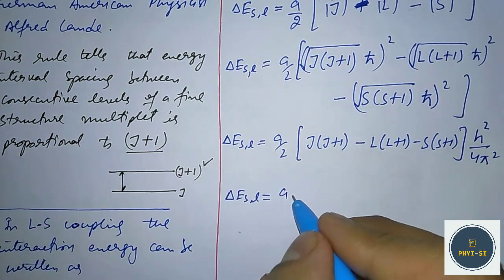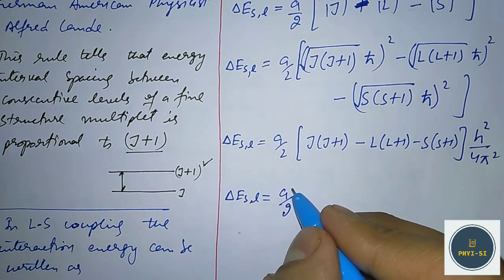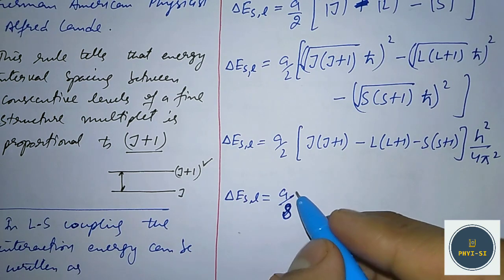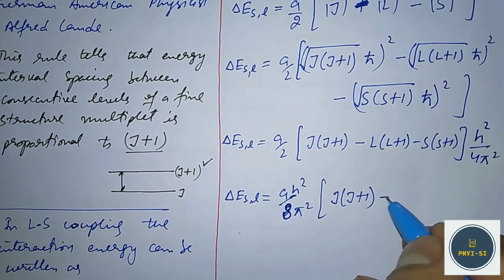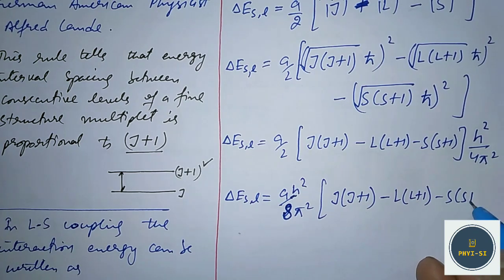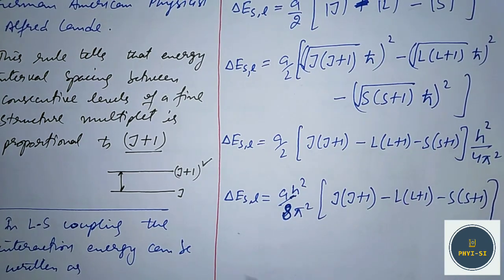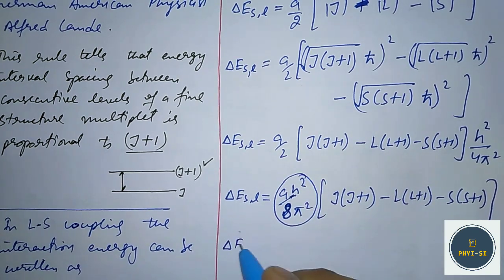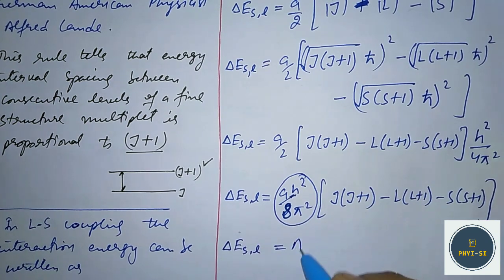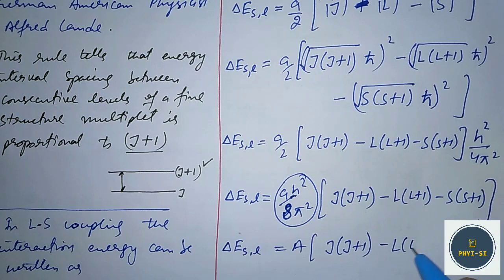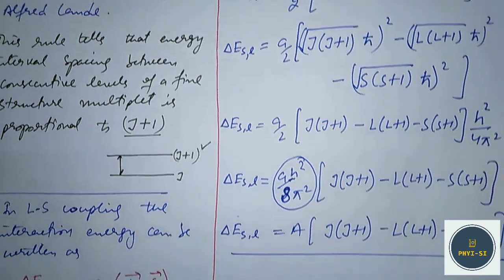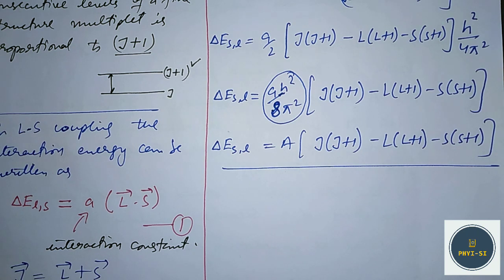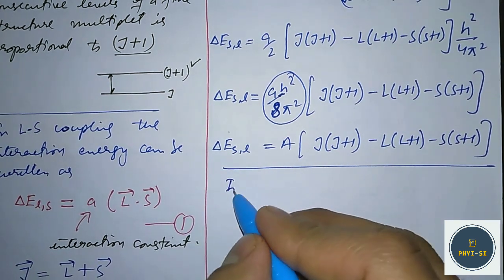We can write this as ΔE_SL equals a constant times [J(J+1) − L(L+1) − S(S+1)], where A is just a constant. The energy difference is actually proportional to this expression. Now, when we apply LS coupling, the different multiplets have the same values of L and S.